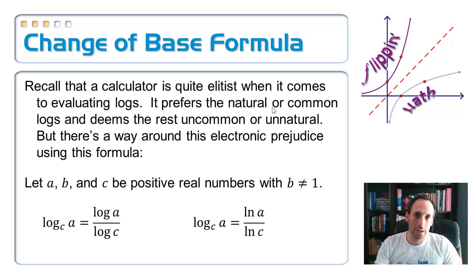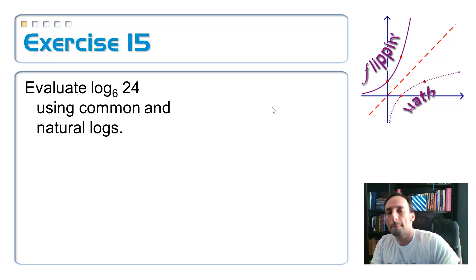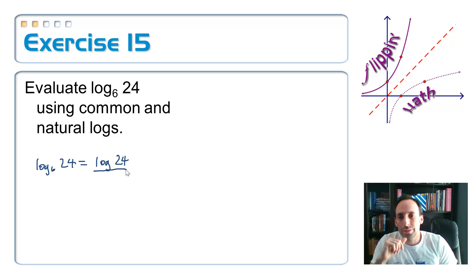All right. So, let's use our calculator now to actually evaluate some logs that aren't base 10 or E. Evaluate the log base 6 of 24 using both common logs and natural logs. And I should get exactly the same number. So, the log base 6 of 24 should be equal to... So, let's do the common log first. First, you take the log of whatever you're originally taking the log of. So, log of 24 divided by the log of the original base, log of 6.